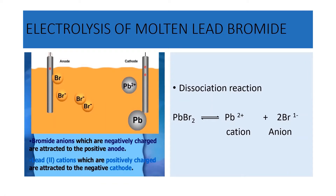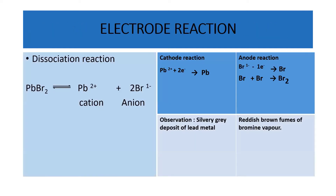What reaction is taking place at the cathode and anode? At the cathode, Pb2+ will gain two electrons and discharge, depositing lead metal at the cathode. At the anode, Br- will release or donate an electron and form bromine fumes, that is bromine vapor.